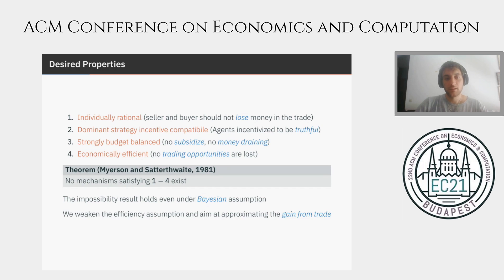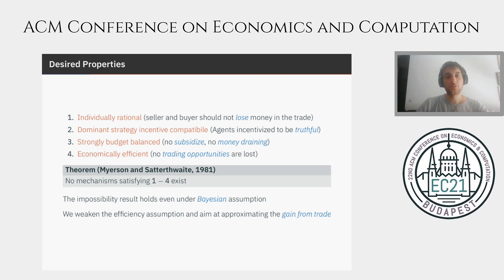So, we have this impossibility result. What do we do? The typical approach is to keep the first three conditions — which enforce robustness to misreporting and make the mechanism reasonable and implementable in practice — and try to weaken the assumption on efficiency. So, let's aim at something that approximates the gain from trade, that is the difference in social welfare at the end of the trade. We will see a more precise definition of that later.